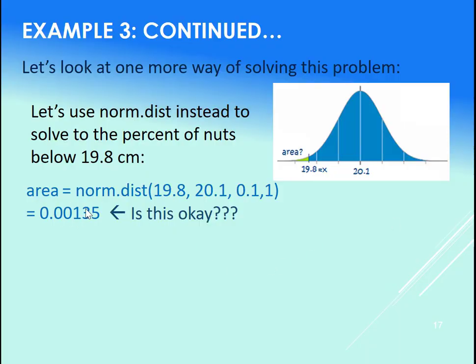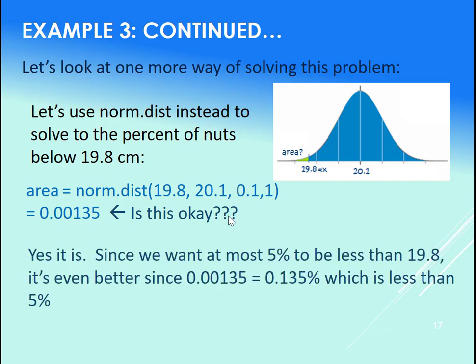So this is great. What that means is that only 0.00135 is the area below this x, or if you will, only 0.135% of the nuts have a diameter less than 19.8. That's great. That's way below the required 5%. So this is basically our percentage of defective nuts that we cannot use on the bolts that we have.